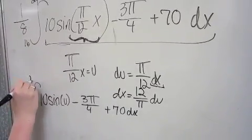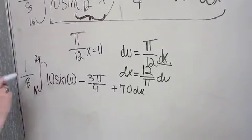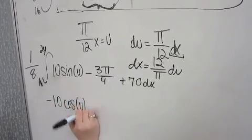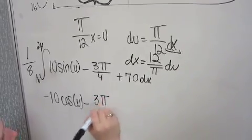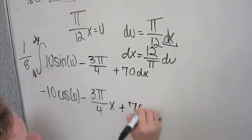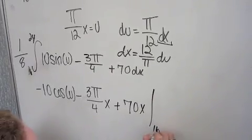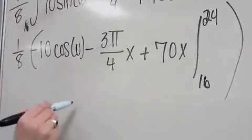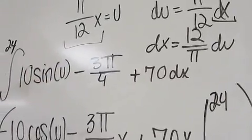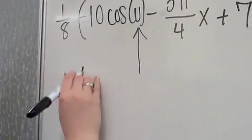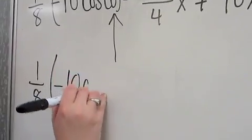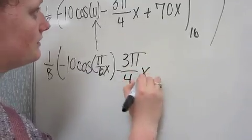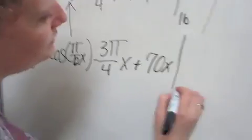The integral from 16 to 24 times 1 eighth to find the average. So, now, we have to find the antiderivative of this, which becomes negative 10 cosine of u minus 3π/4x plus 70x in the interval of 16 to 24. Then, all of this is multiplied by 1 eighth. Then, we can now plug back in what we have for x into the u. So, it becomes 1/8 times the quantity of negative 10 cos(πx/12) minus 3πx/4 plus 70x on the interval of 16 to 24.